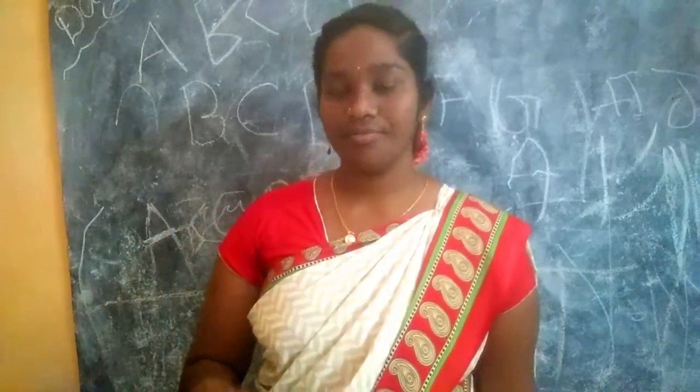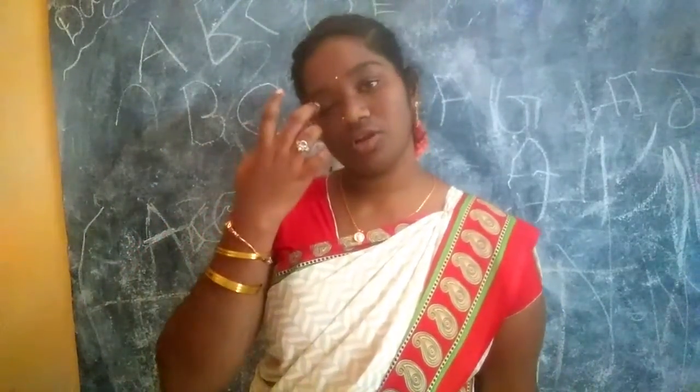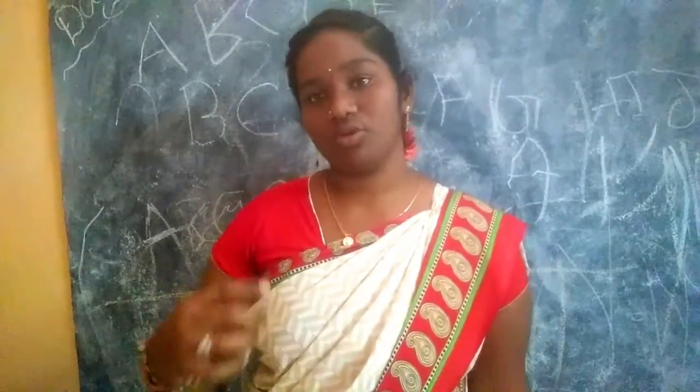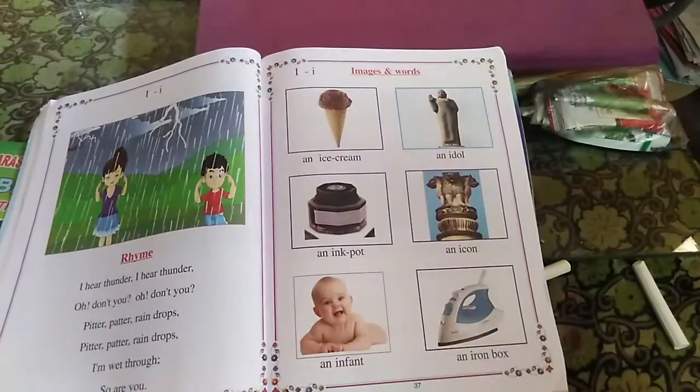Okay children, let's repeat. I hear thunder, hark don't you. Now: I hear thunder, I hear thunder, hark don't you. Okay children — I hear thunder, hark don't you.